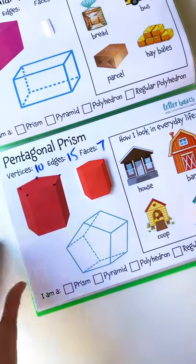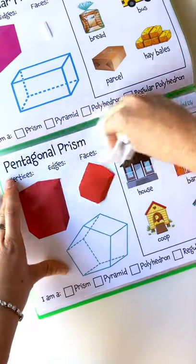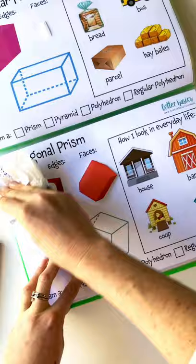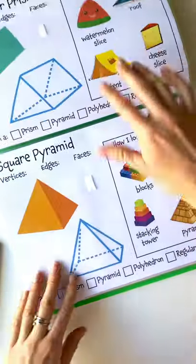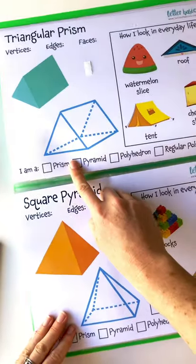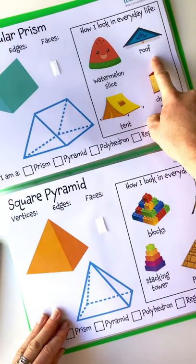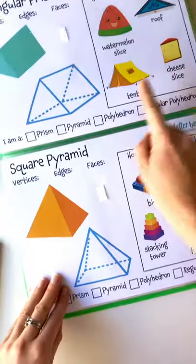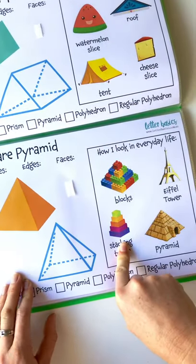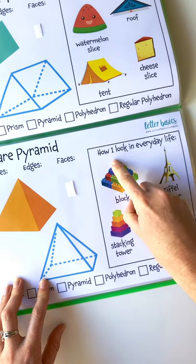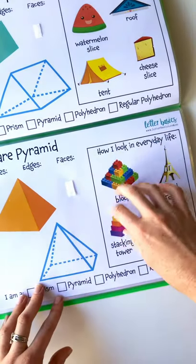Then we've got triangular prism, so watermelon slices, roof, tent, slice of cheese. Square pyramids, this one was tricky. Blocks, stacking towers. Yes, technically they don't have the apex bit on the bottom, but they're the general shape, and it is hard to find them in real life. Pyramid and Eiffel Tower is again that pyramid shape.